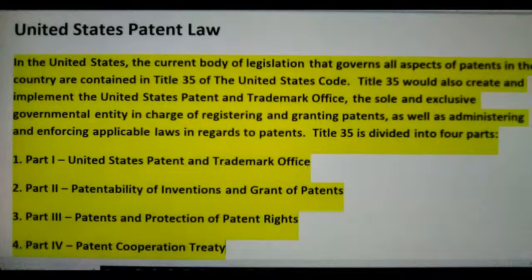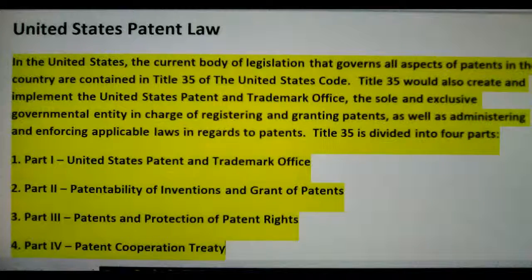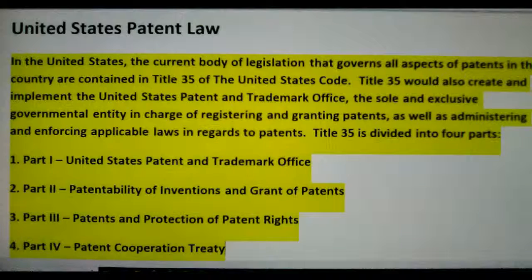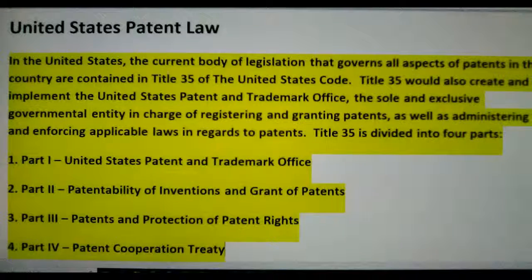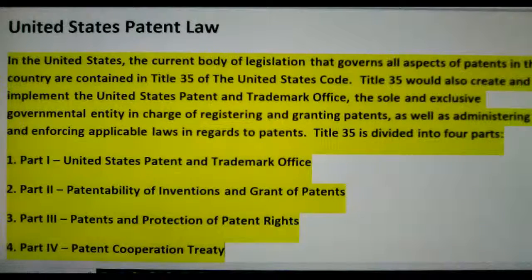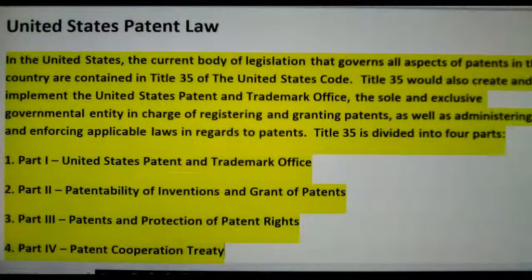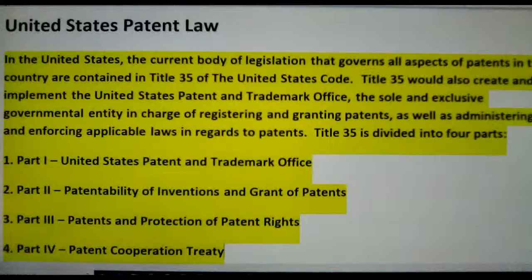In the United States, the current body of legislation that governs all aspects of patents in the country is contained in Title 35 of the United States Code. Title 35 also created and implemented the United States Patent and Trademark Office, the sole and exclusive governmental entity in charge of registering and granting patents, as well as administering and enforcing applicable laws regarding patents. Title 35 is divided into four parts: Part 1 — United States Patent and Trademark Office; Part 2 — Patentability of Inventions and Grant of Patents; Part 3 — Patents and Protection; and Part 4 — Patent Cooperation Treaty.